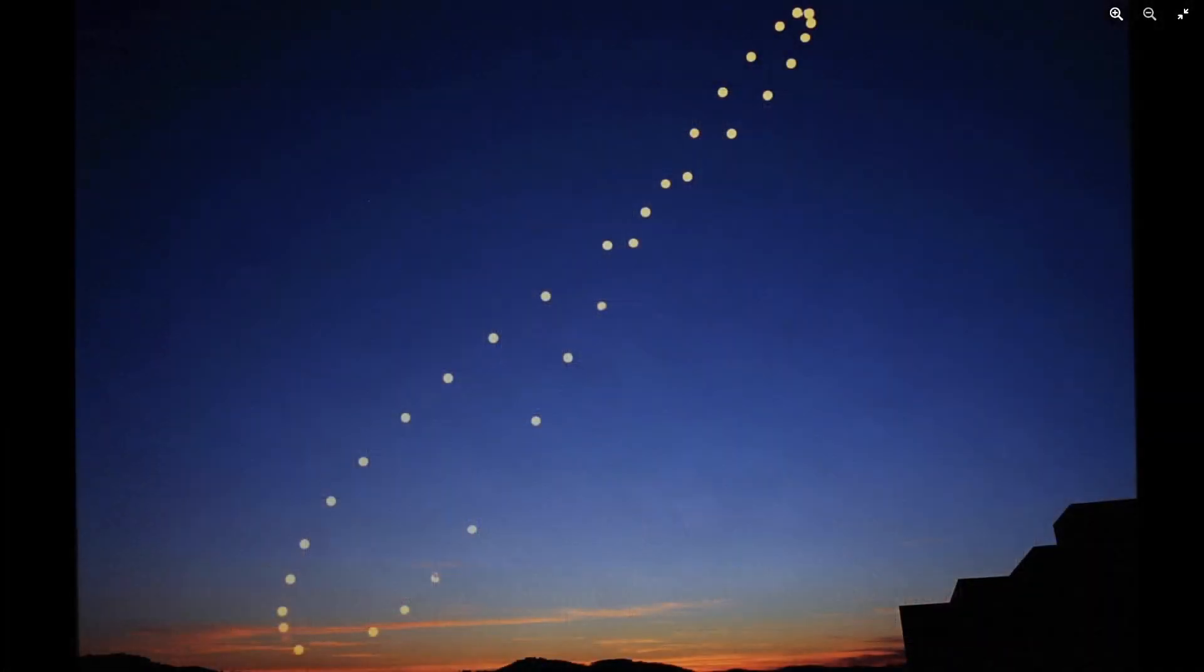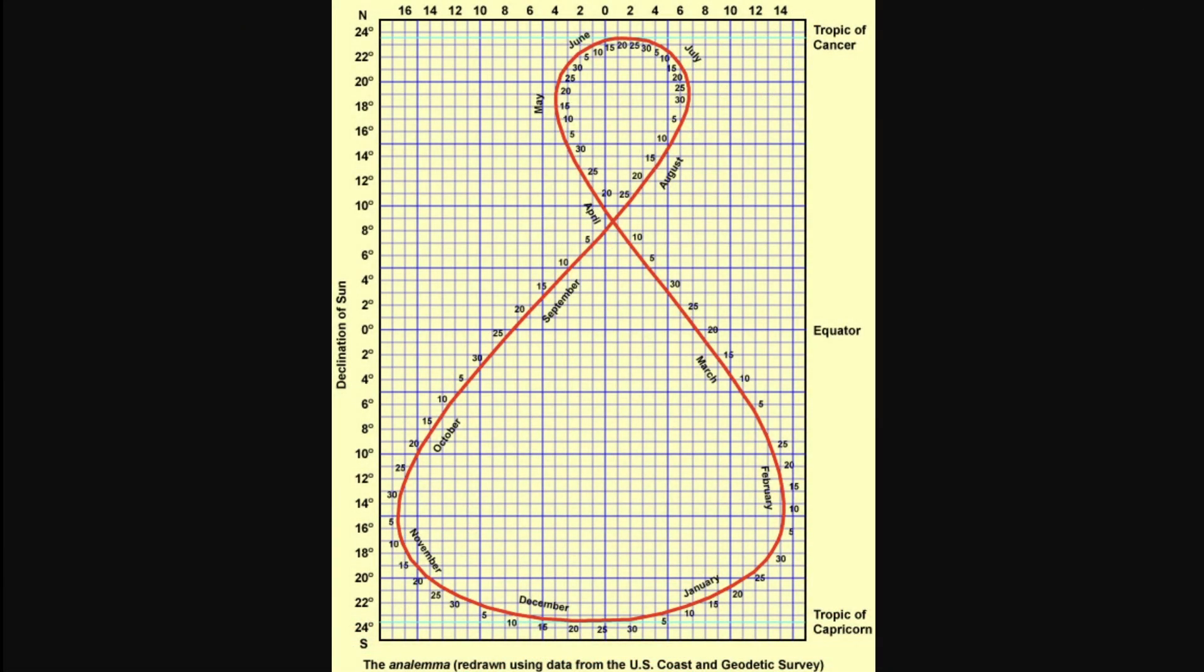Perhaps you're more used to seeing the equation of time in the form of what's called a solar analemma. This is the figure of eight that is formed by the Sun if you take a photograph of the sky at the same time every day for a year. You'll see that the Sun changes in declination and it also speeds up or slows down. By looking at it in graphical form you can not only tell the declination of the Sun at any given month and date, you can also tell the exact correction due to the equation of time.